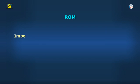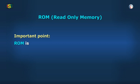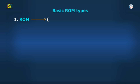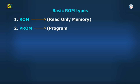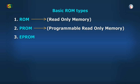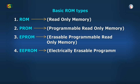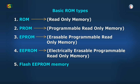Note down some important points about ROM — that is, Read Only Memory. ROM is basically used to store permanent programs, such as programs for the functioning of the monitor. There are five basic ROM types: ROM (Read-Only Memory), PROM (Programmable Read-Only Memory), EPROM (Erasable Programmable Read-Only Memory), Flash, and EEPROM.